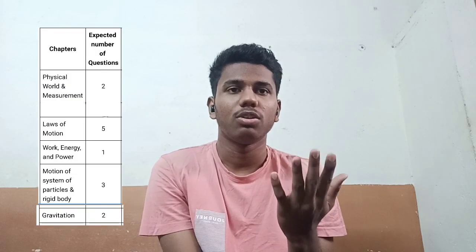Sometimes units and measurements, and the laws of motion come together. Rotation is one important chapter. Then there is gravitation, which has about 2 questions. Moving to 12th physics: electrostatics is 2-3 questions, current electricity is 3-4, magnetism is 3-4, and optics is about 5 questions.